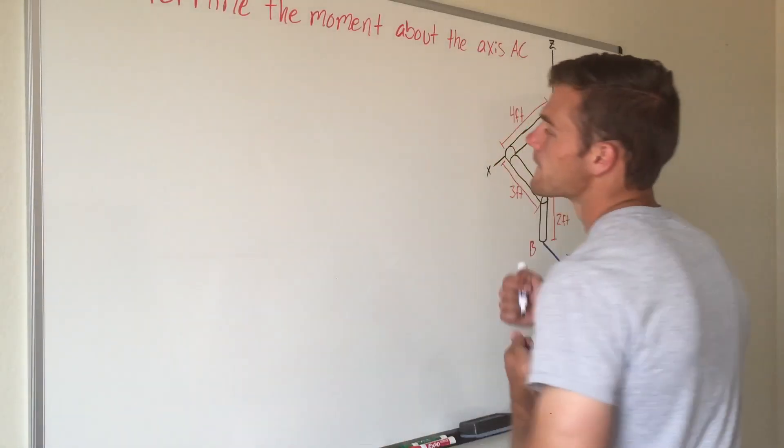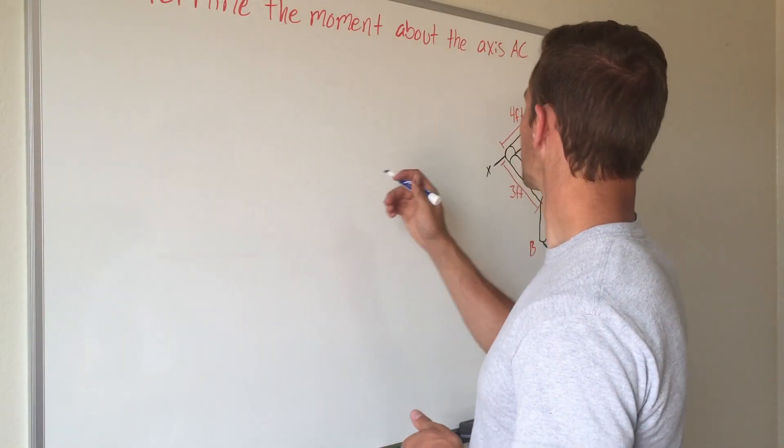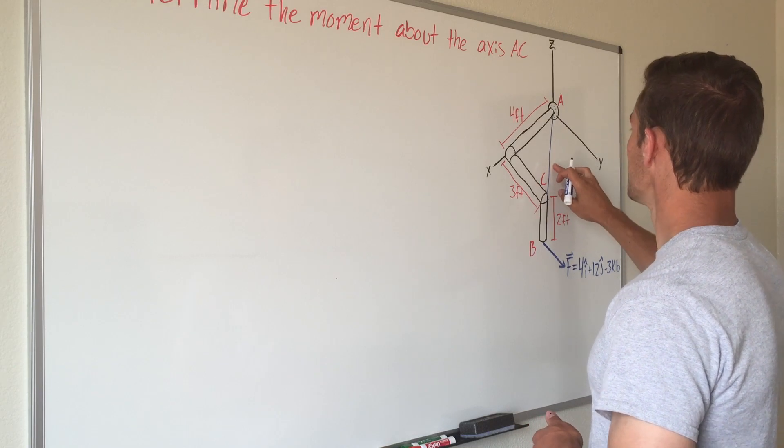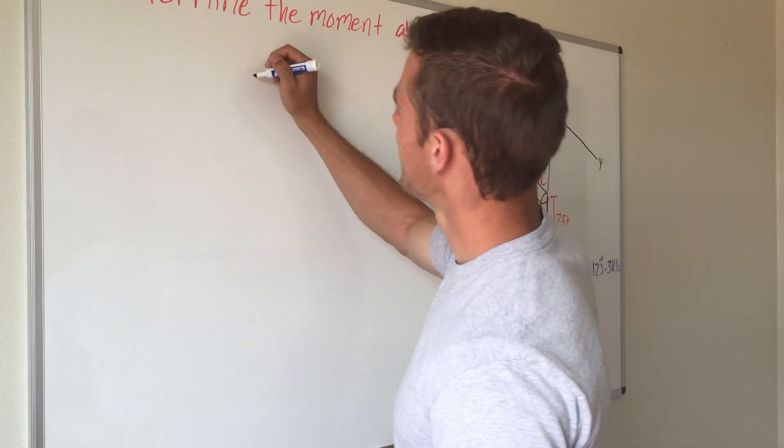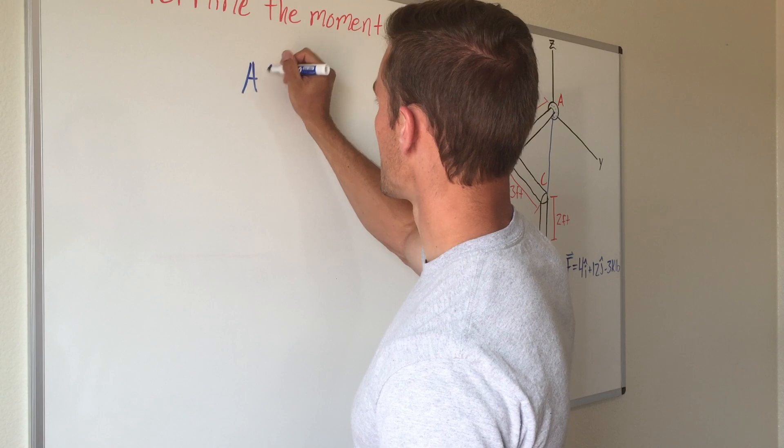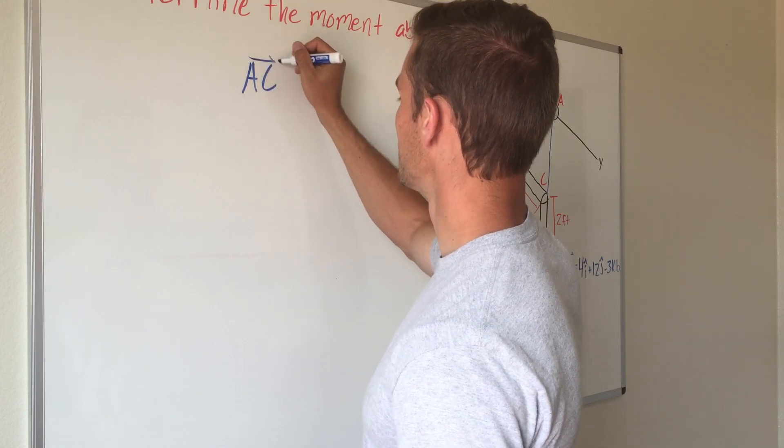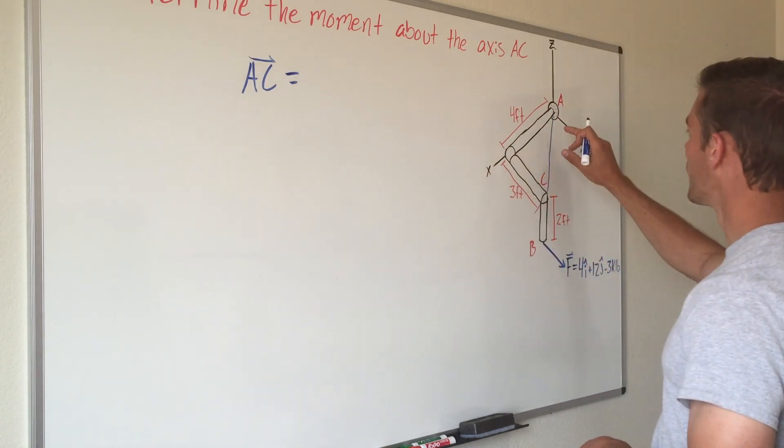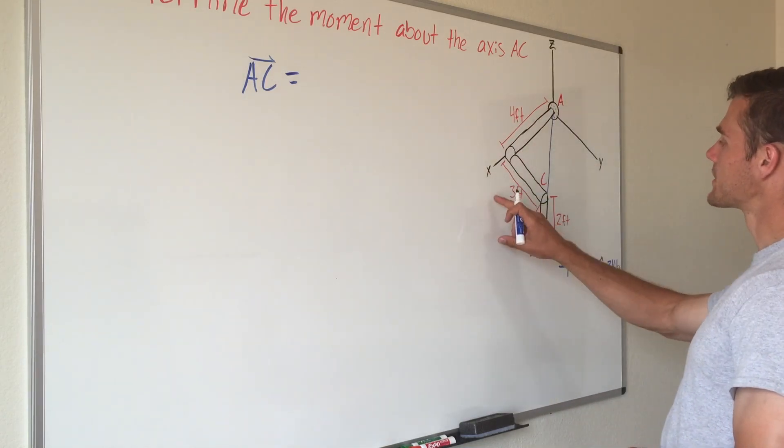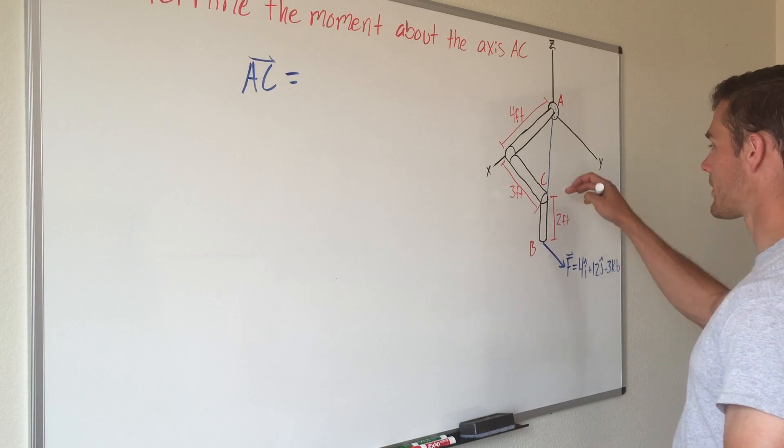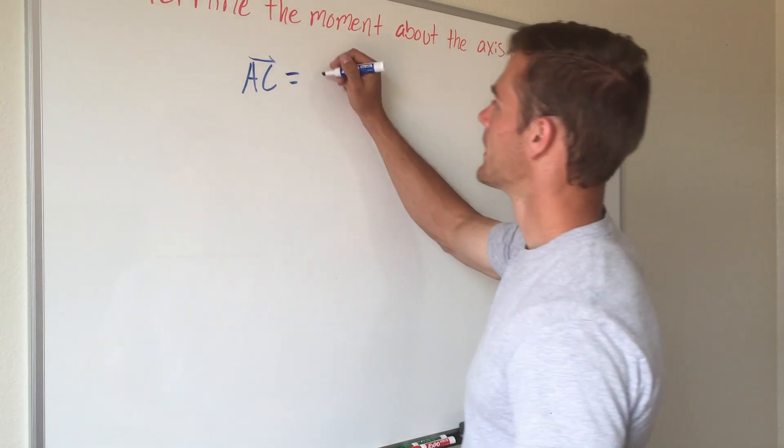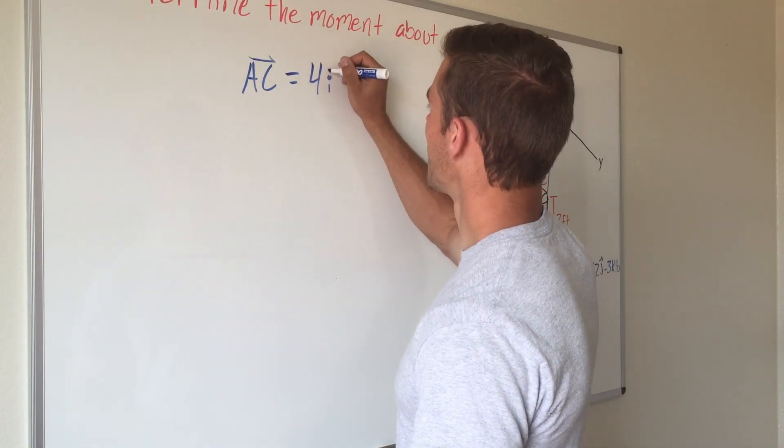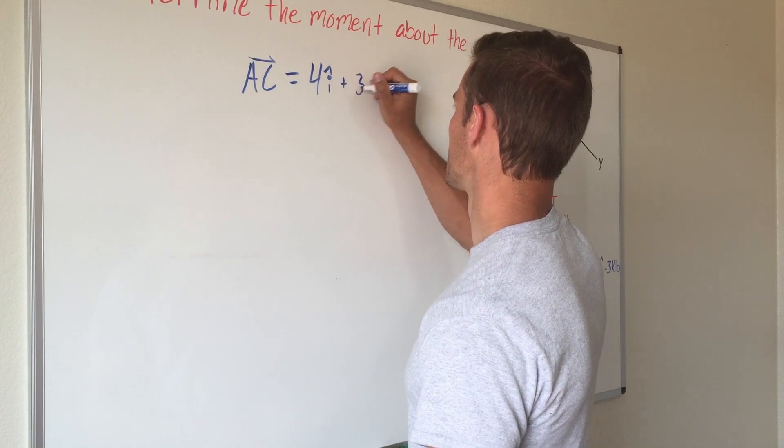So the way we're going to solve for our unit vector is we're going to make a vector we'll call AC because it's going between point A and point C. That's going to go 4 feet in the x direction and 3 feet in the y direction and it's not going at all in the z direction, so that will be 4i plus 3j.